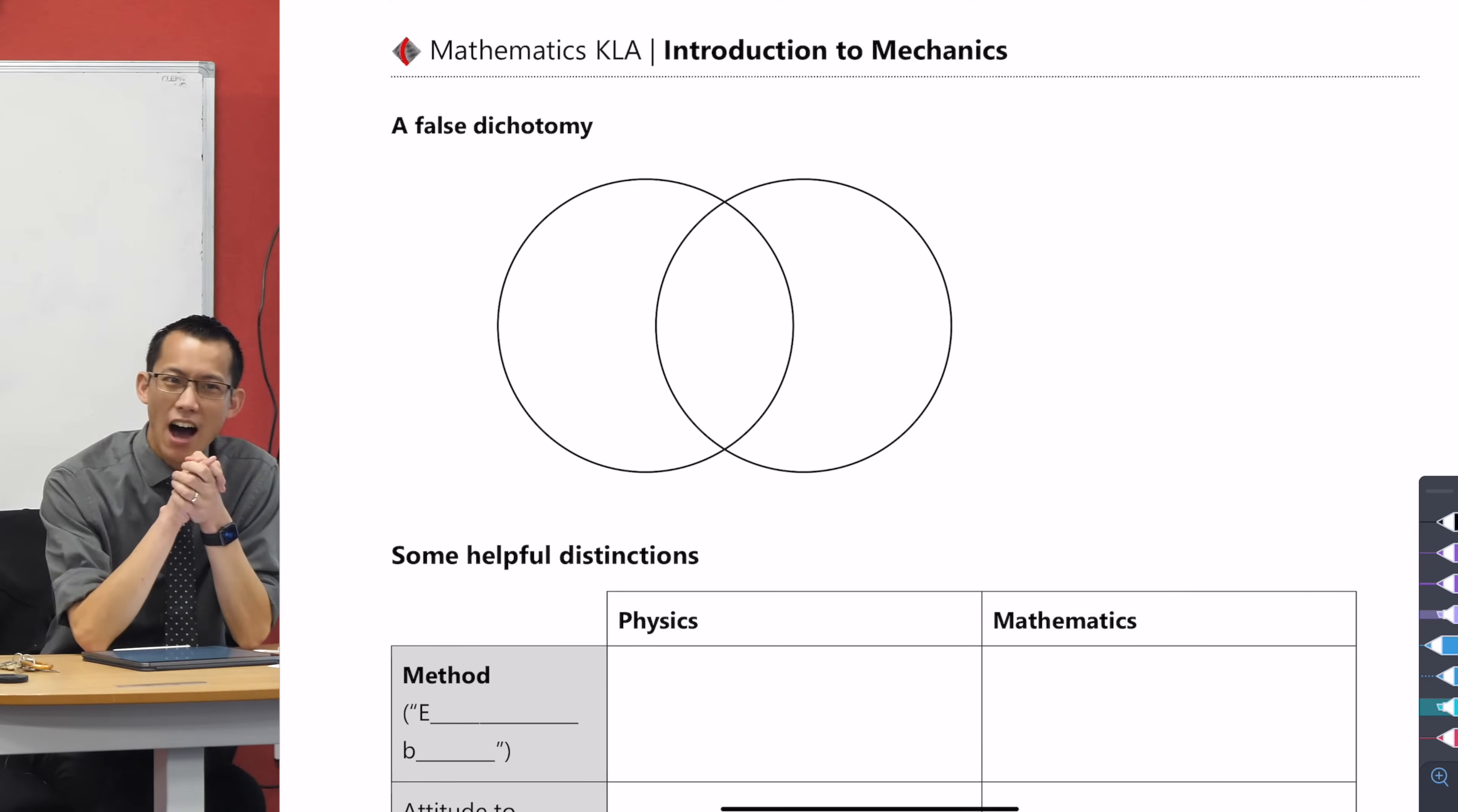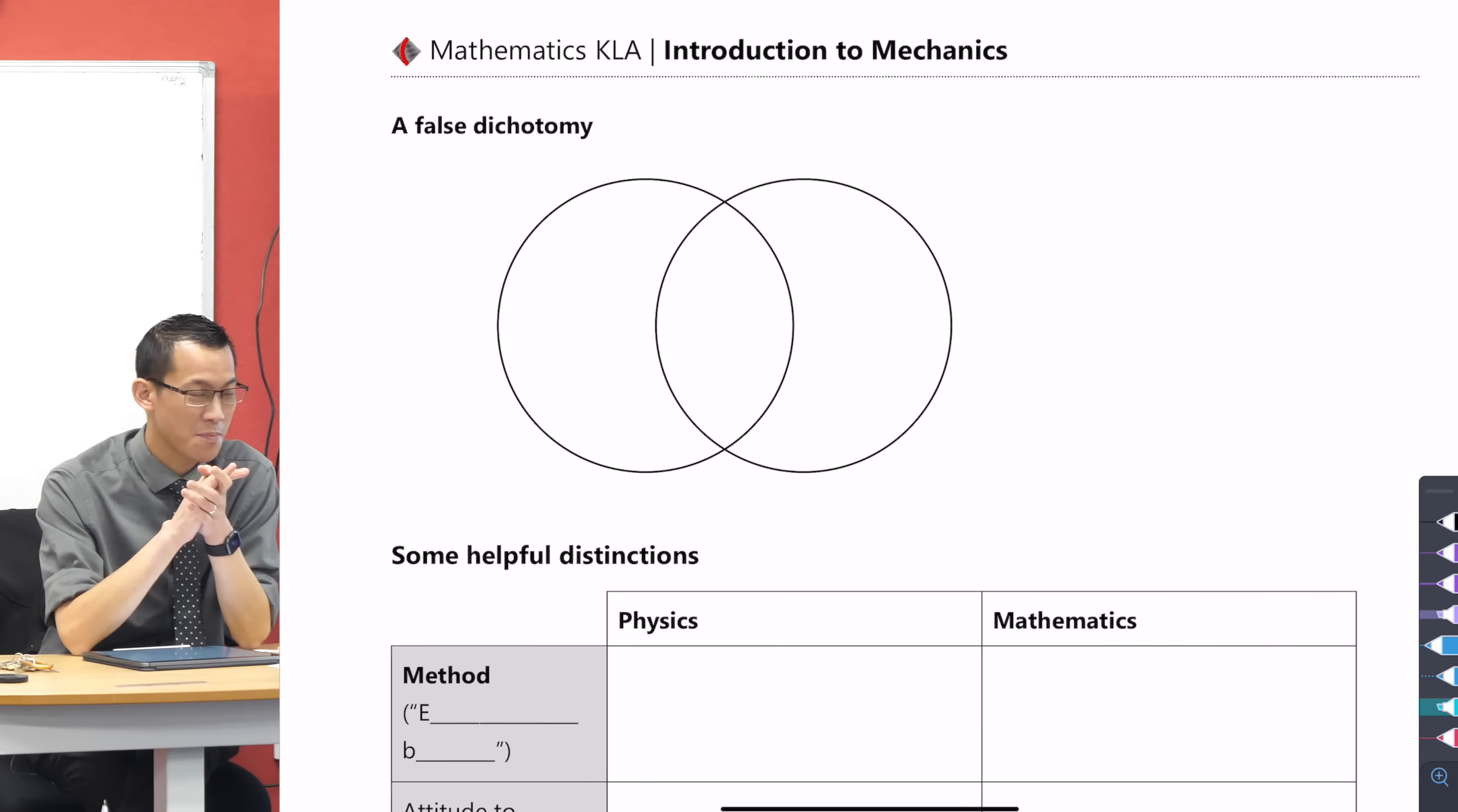Afternoon everyone! I wonder how many of you know off the top of your heads how many topics there are within Extension 2? Does anyone know how many topics there are? Complex numbers? Should we count them?